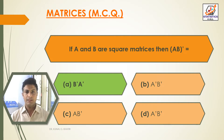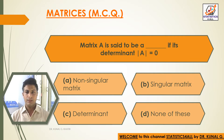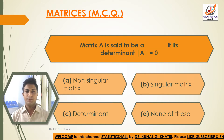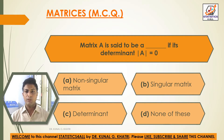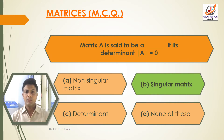Next question: matrix A is said to be [blank] if its determinant |A| is equal to 0 — option A: non-singular matrix; option B: singular matrix; option C: determinant; option D: none of these. The answer is option B, singular matrix. If its determinant |A| is equal to 0, the matrix A is a singular matrix.